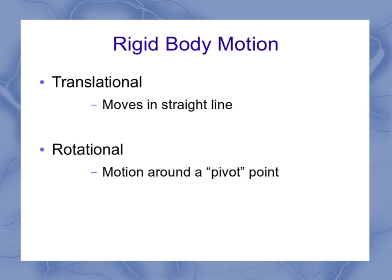The pivot point doesn't have to be a physical set point in it. It's just that everything goes in a circle around some part of the object. An object can have both of these motions at the same time. So it can be rotating around a pivot point and moving sideways in a straight line.